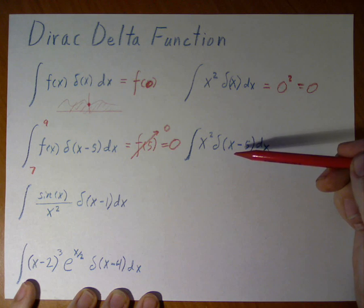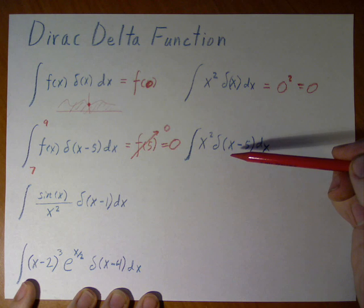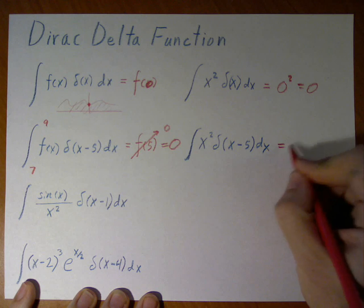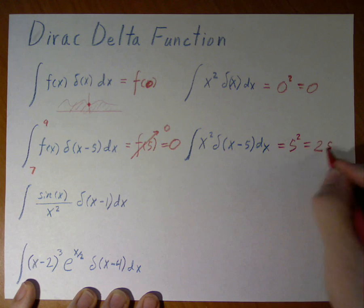If, once again, we do what we just did with delta x minus 5, we get 5 squared, 25.